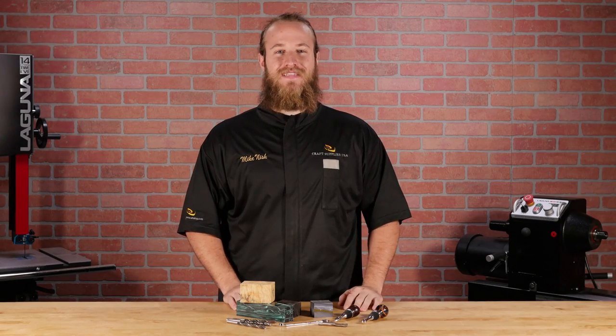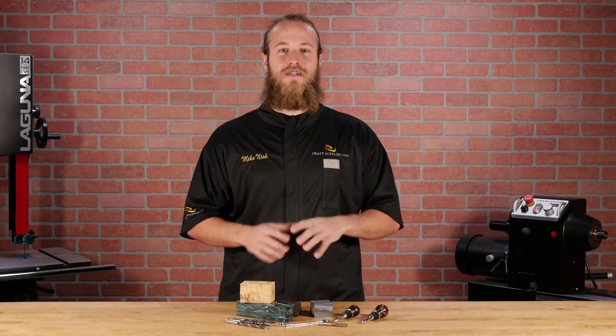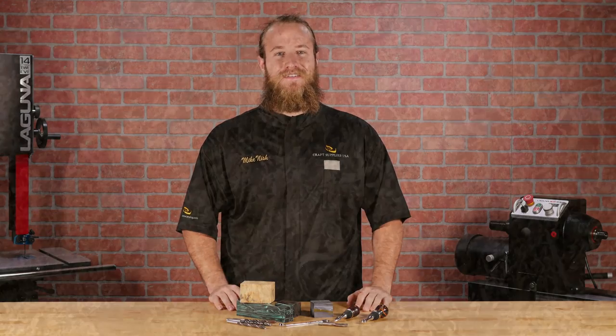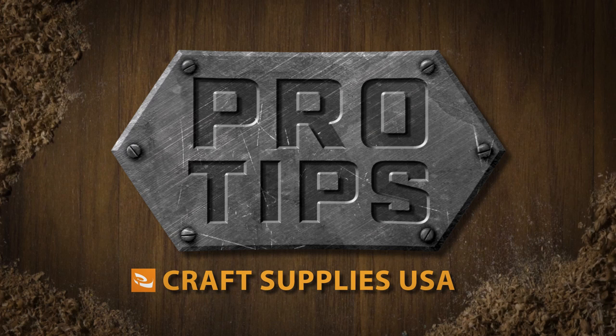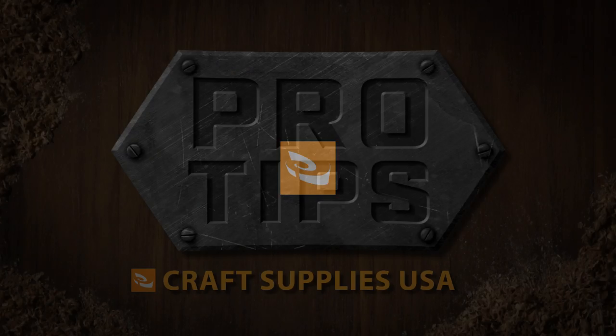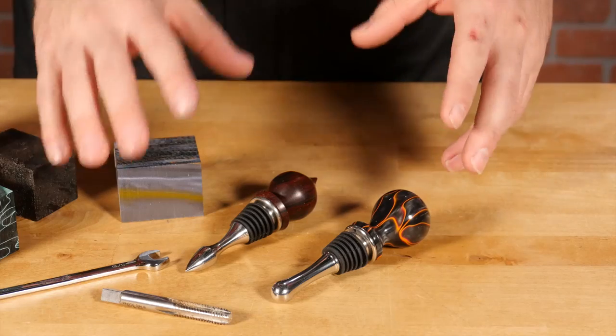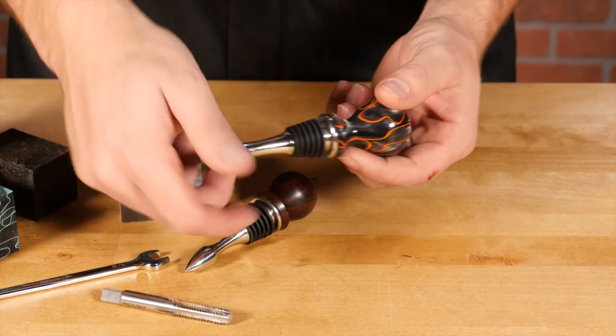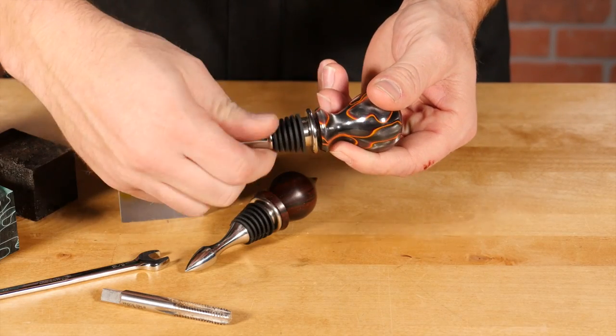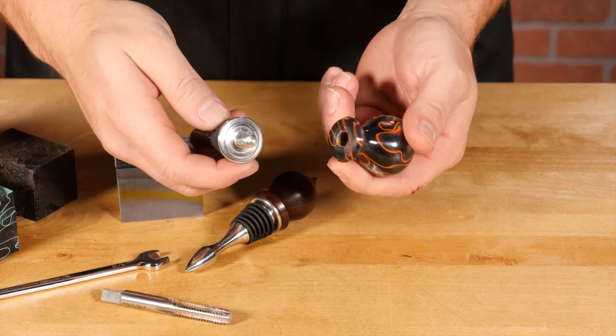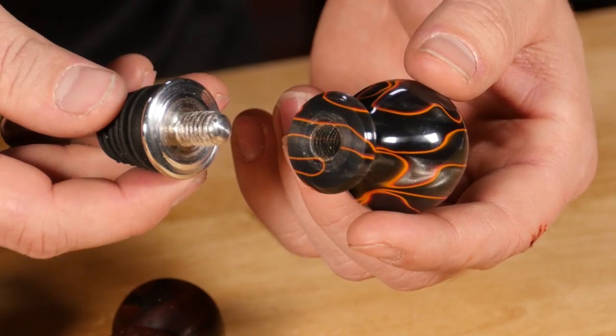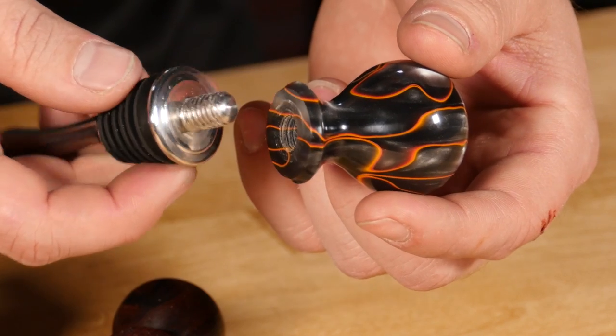Hi, I'm Mike with Craft Supplies USA, and today's pro tip is on threading wood and acrylics. A design feature on a number of our project kits is the ability to unscrew the blank from the hardware, like on this bottle stopper. This allows you to wash the bottle stopper without ruining the blank.